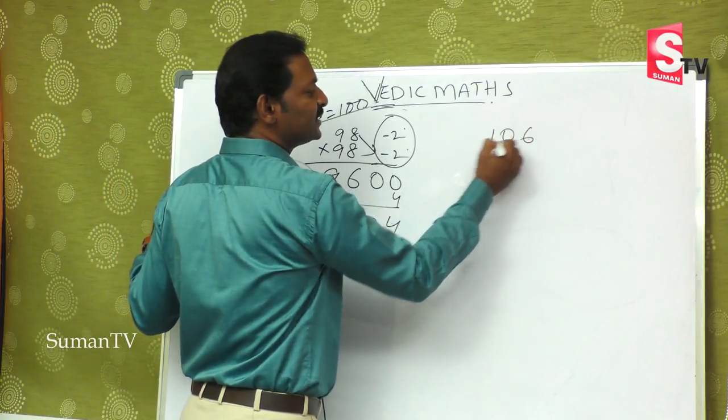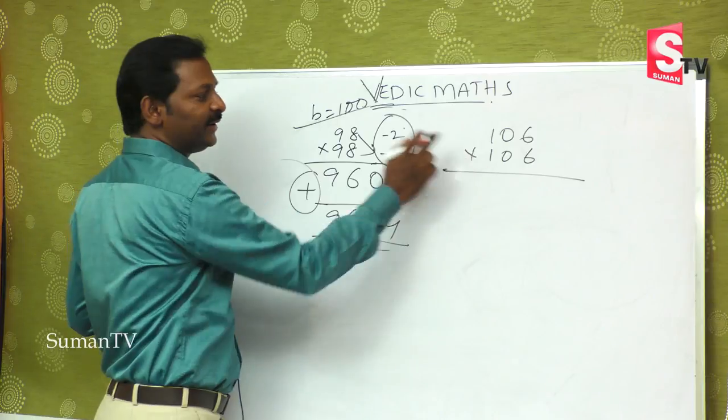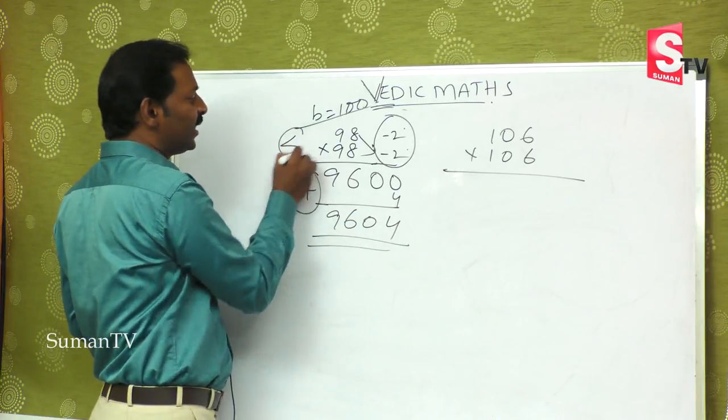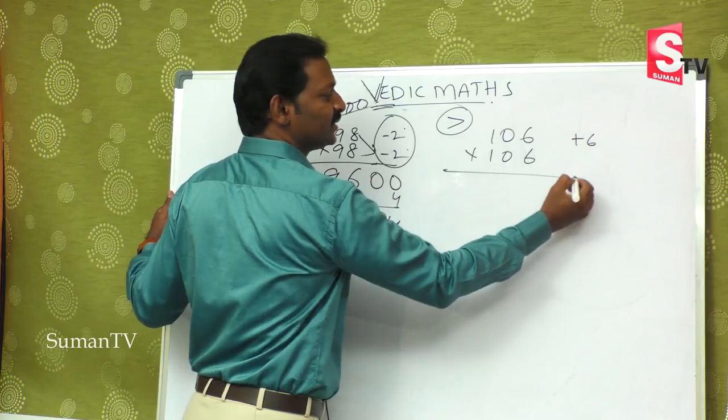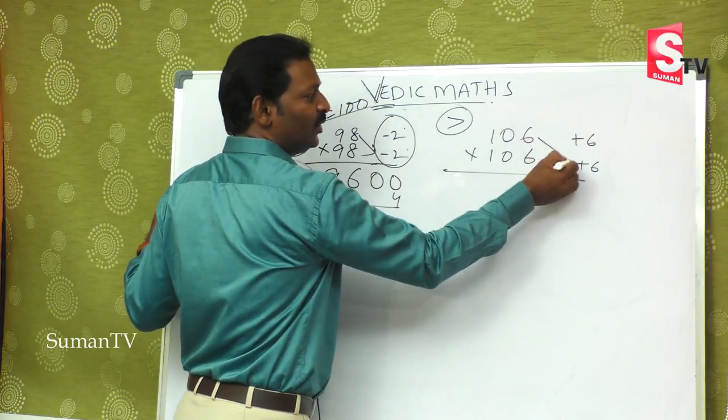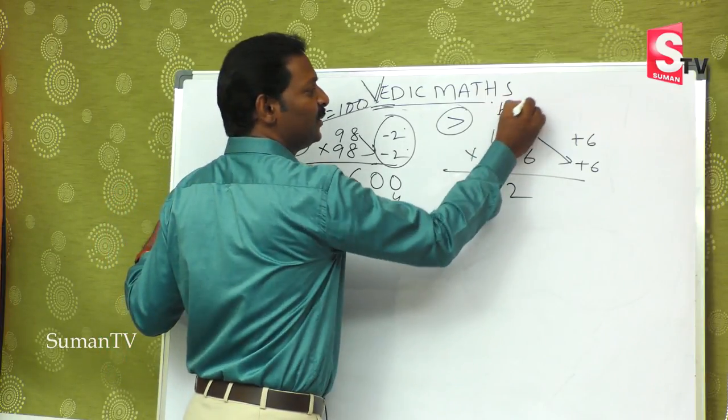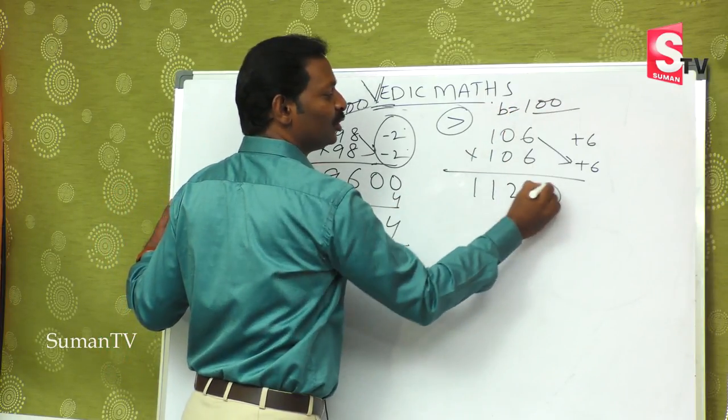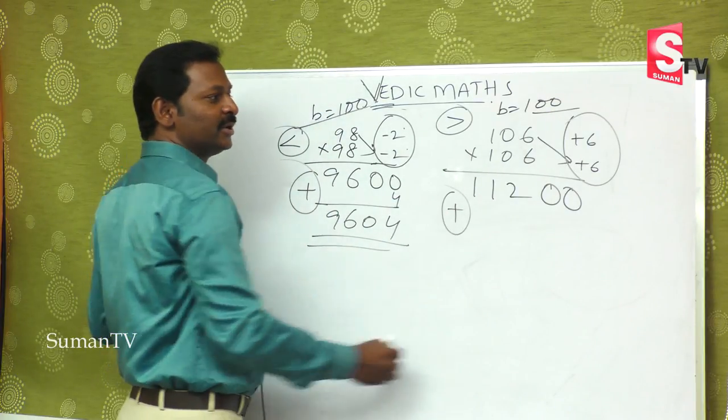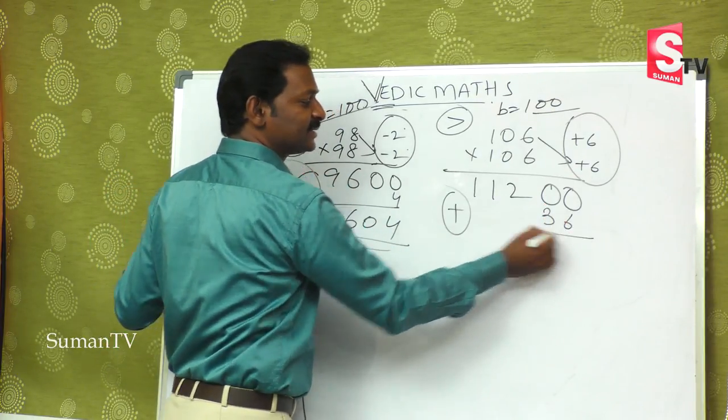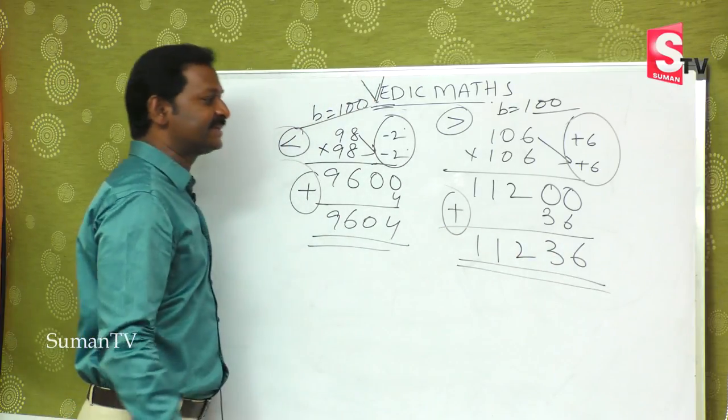Similarly, 106 into 106. This base is 100, but these numbers are greater than 100, plus 6 each. The base is 112, and plus into plus gives plus. So 6 times 6 is 36, and we get 11236.